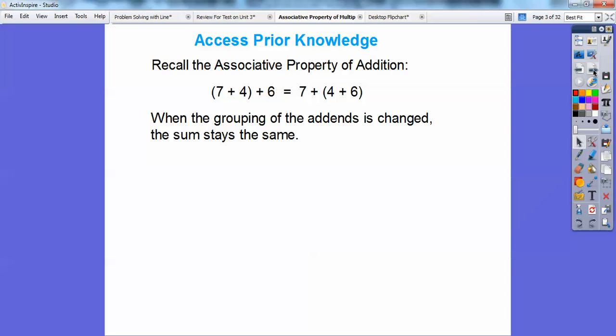So let's access some prior knowledge. The associative property of addition is this. When I add groups together in parentheses, remember what you do in parentheses, you've got to do first. So if I added 7 plus 4 first and then plus 6, it's going to be the same as if I added 4 plus 6 first and then added 7 later. So when grouping the addends,